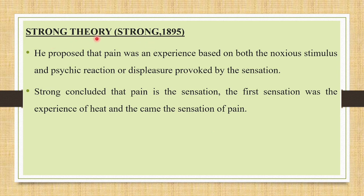The next theory is the Strong theory, put forward by Strong in 1895. He proposed that pain is an experience based on both the noxious stimulus and the psychic reaction or displeasure provoked by the sensation. Strong concluded that pain is a sensation — the first sensation being the experience of heat, followed by the sensation of pain.